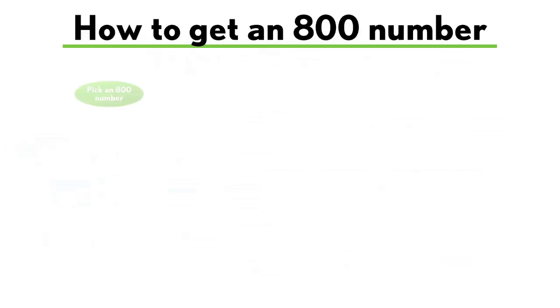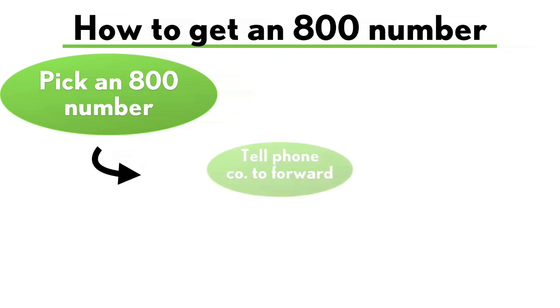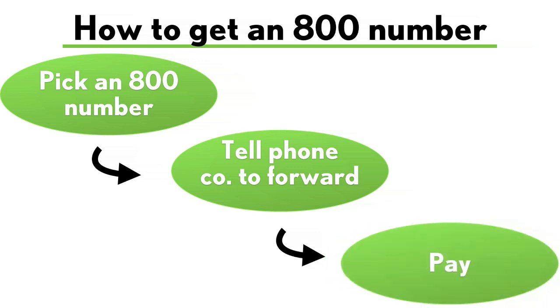Getting an 800 number is fairly easy. First you pick your 800 number, then you tell the phone company what your real number is so they can forward calls to that number, and then you pay them. That's it.